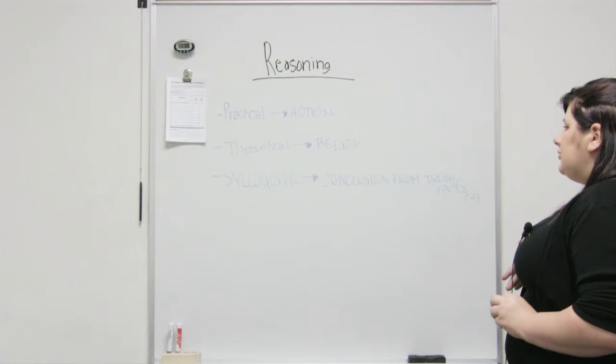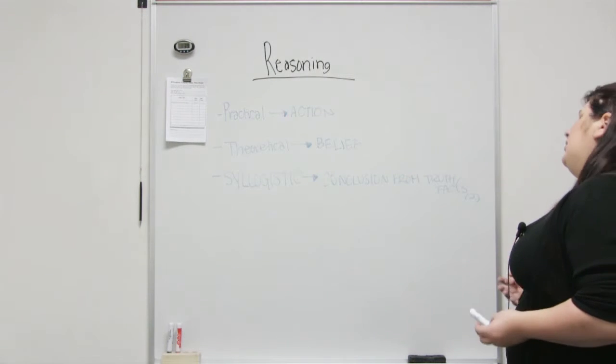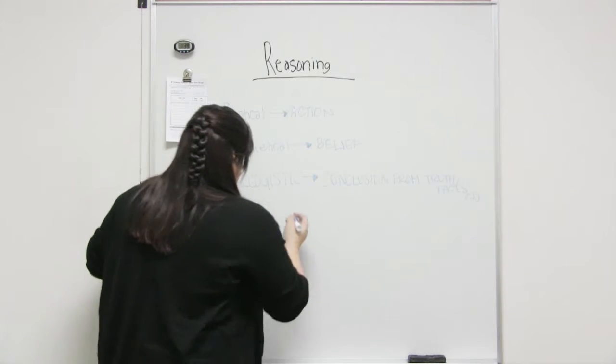In syllogistic reasoning, what we're doing is we try to find a conclusion from usually two statements or facts that we believe to be truth. So for example, it's a lot like a math proof but with words.